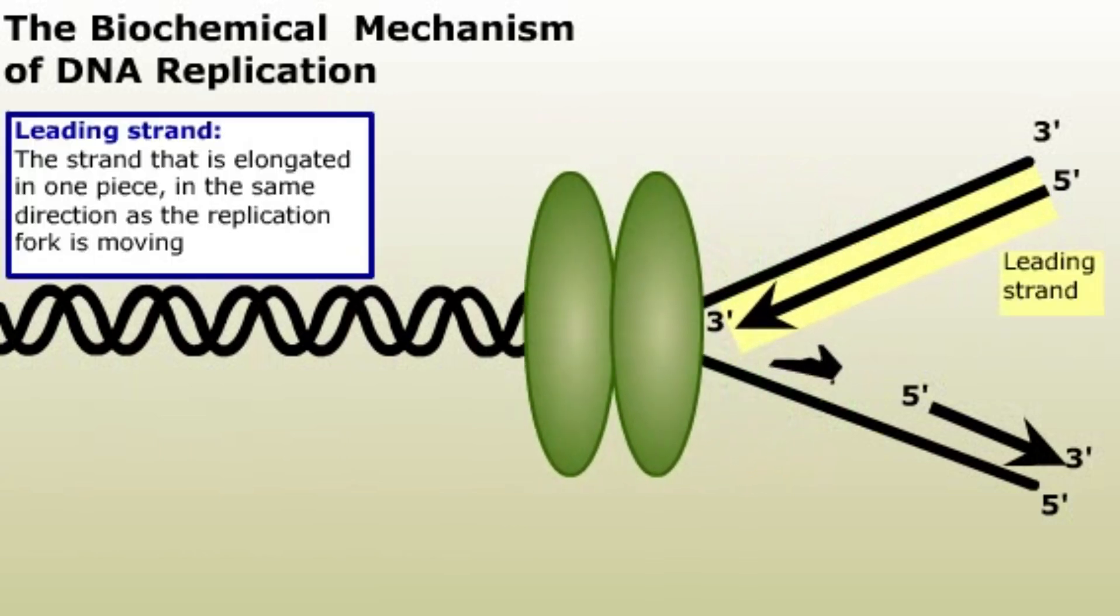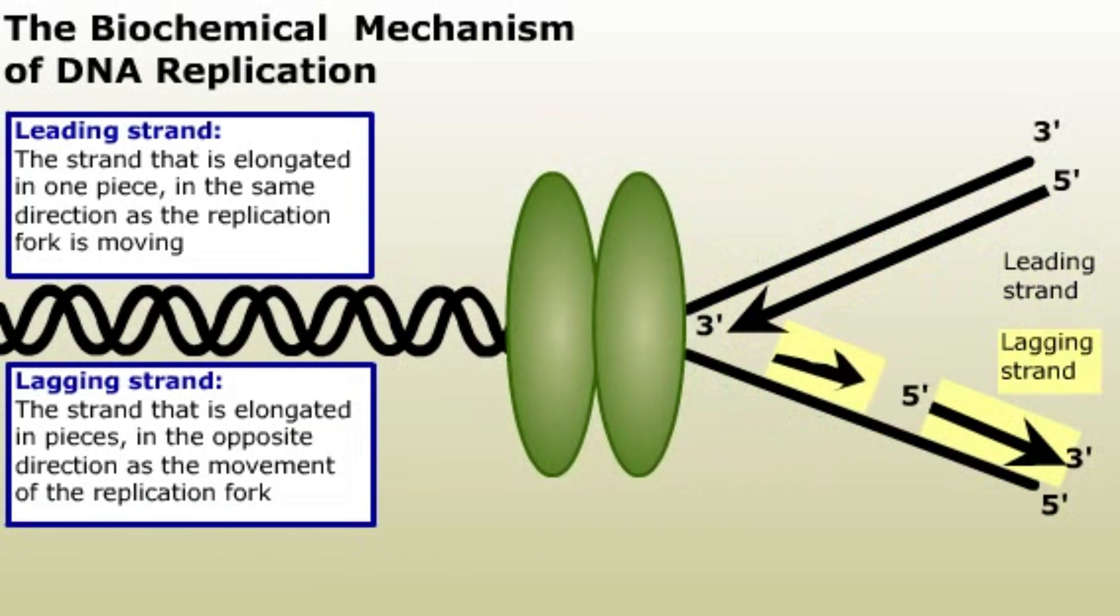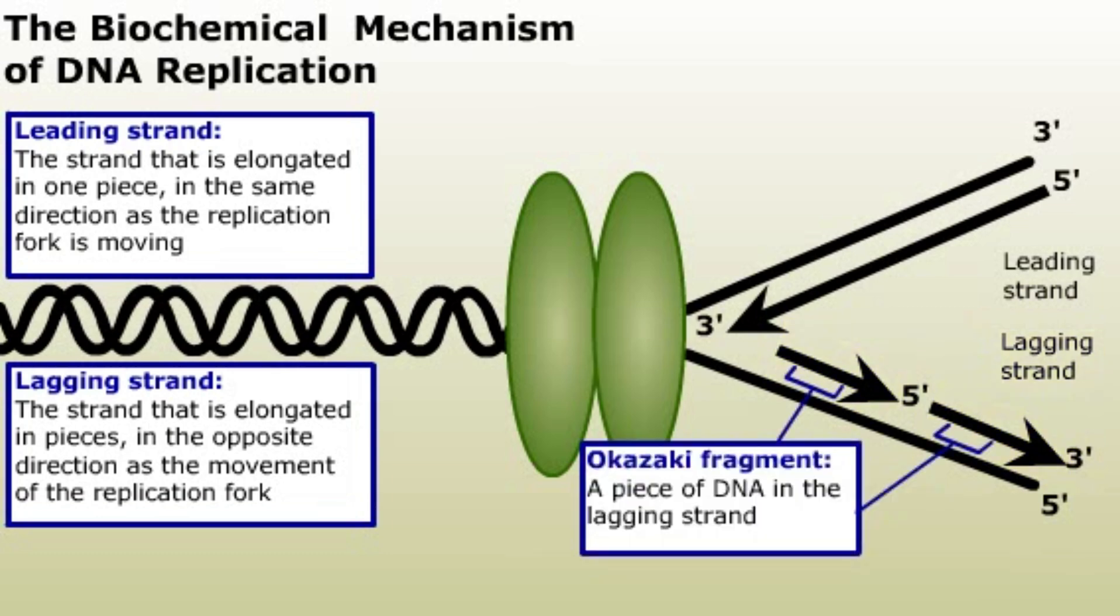The other strand, the lagging strand, has to be elongated in pieces in the opposite direction as the movement of the replication fork. The pieces are known as Okazaki fragments. The overall direction of DNA elongation is in the direction of the movement of the replication fork.